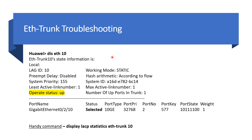To troubleshoot your Ethernet trunk interface you can run 'display Ethernet trunk interface 10'. In the output we can see the LAG ID is 10, and the working mode is 'static', indicating static LACP. If it were manual, you would see working mode as 'normal'. Preemption delay is shown as disabled. The hash arithmetic field shows the load balancing algorithm — here it is set to default, which is based on flow.